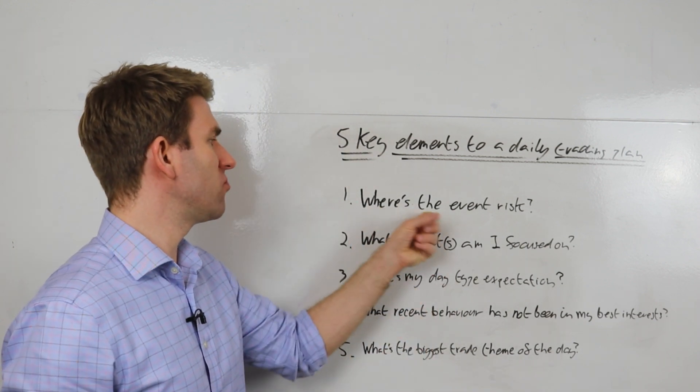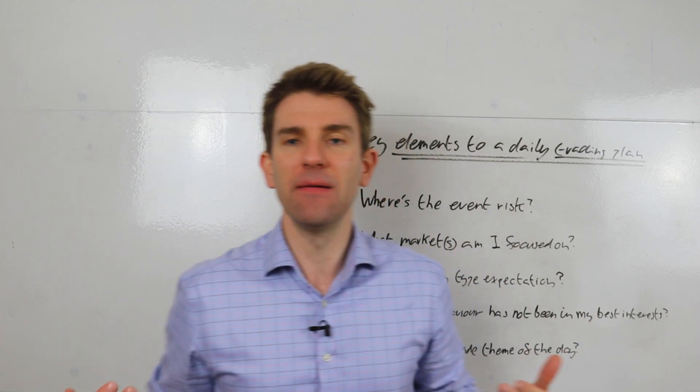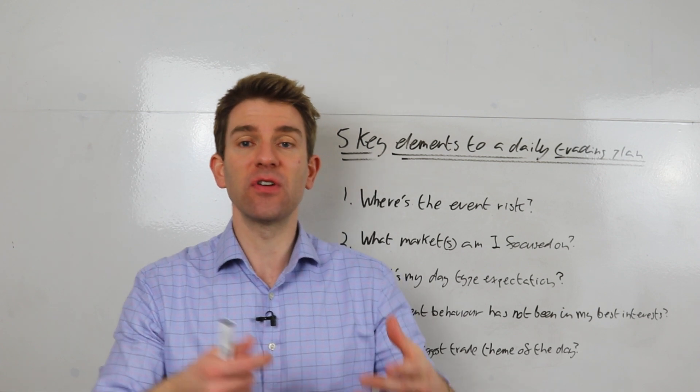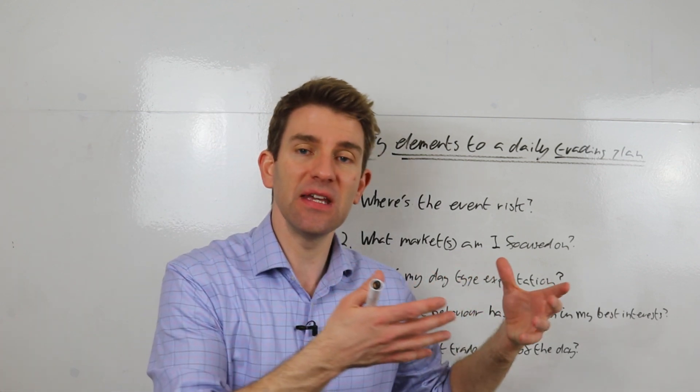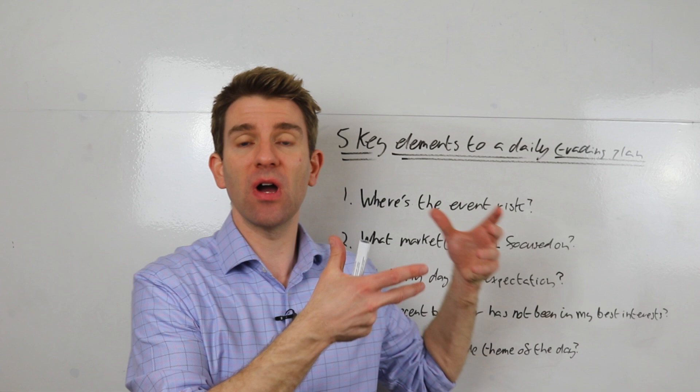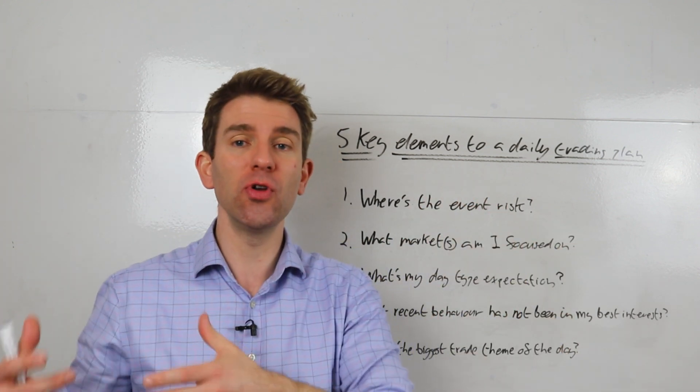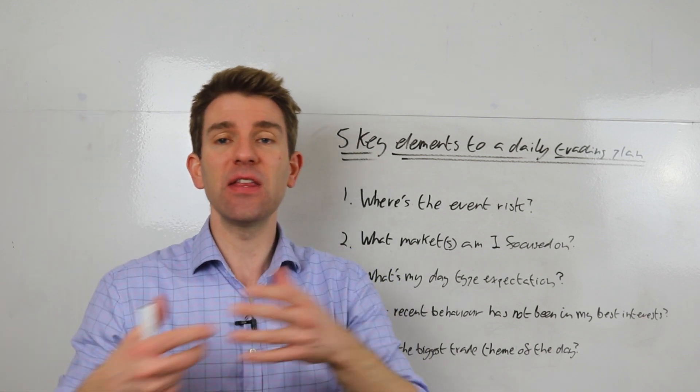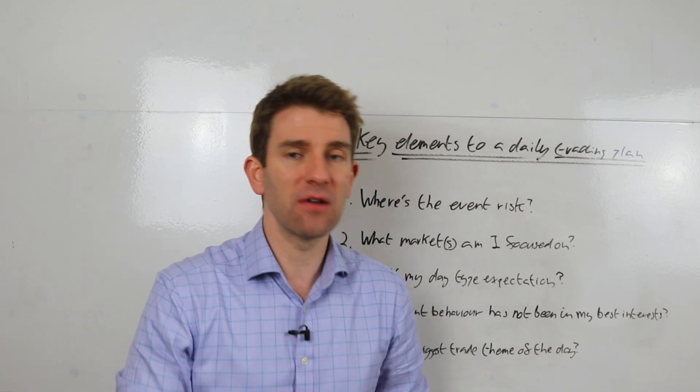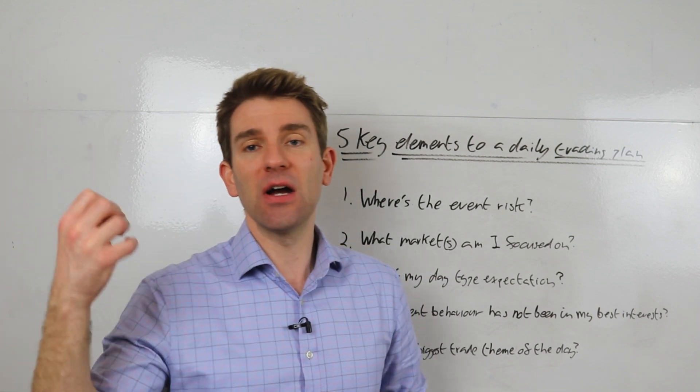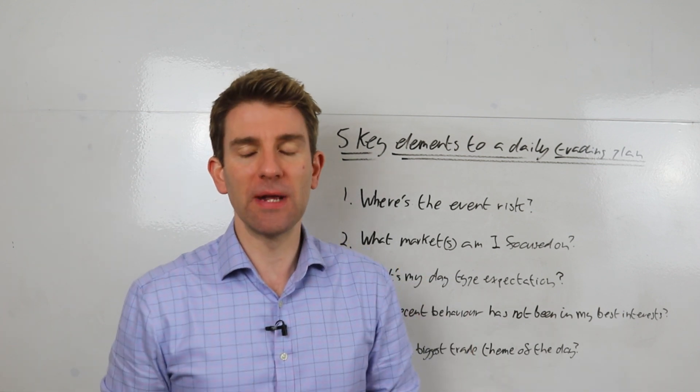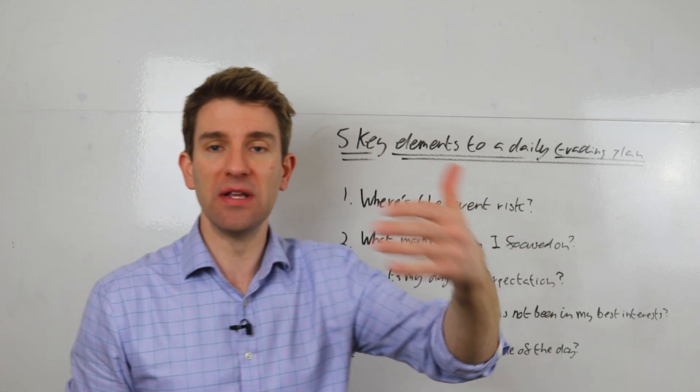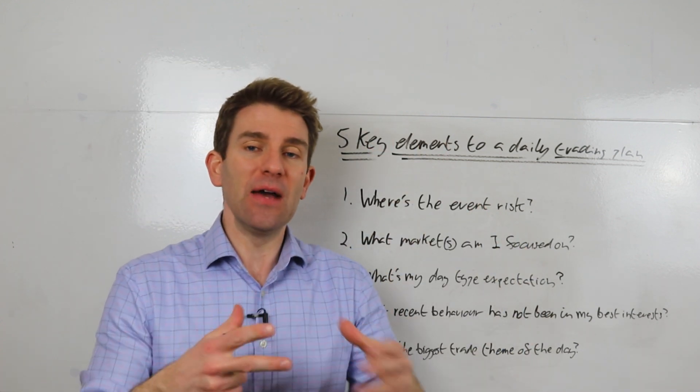So number one for me is always where's the event risk of the day? In other words, do I have data coming out? Is there news that's driving stuff? For example, is Brexit driving the GBP price? Is trade war news flow driving the dollar price? Is something that you're trading, maybe you're trading CAD and it's being influenced by a commodity at the moment more than it is normally? Whatever that may be, regardless of what you're trading, that could be a stock, that could be commodity, indices, Forex, whatever. Where's the event risk?